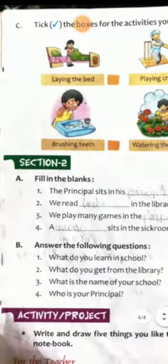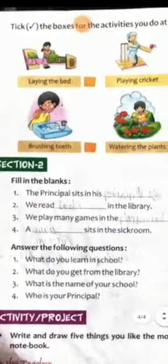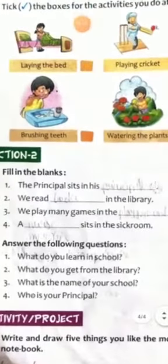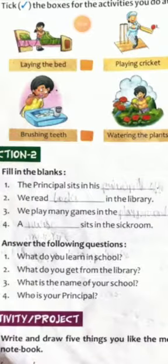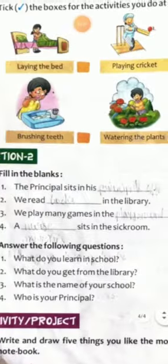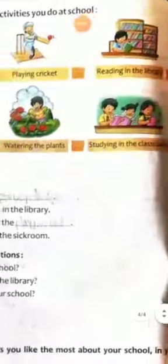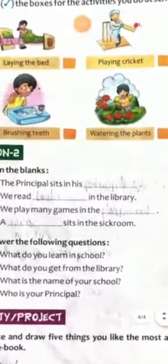This is page number 32. Please use your phone to hear and understand properly. Exercise 6C: tick the boxes for the activities you do at school. Here you can see some figures, and you can identify which activities you do at school.